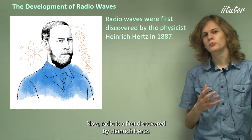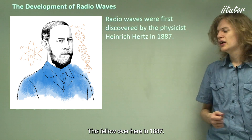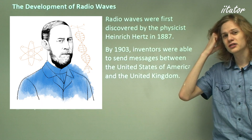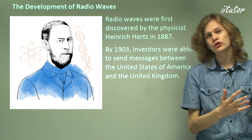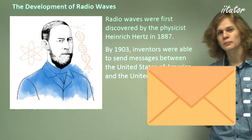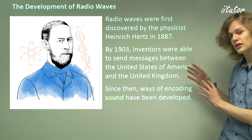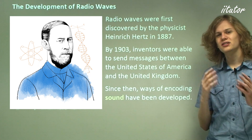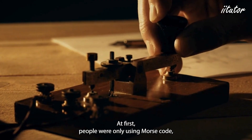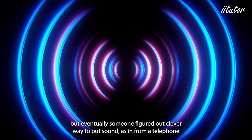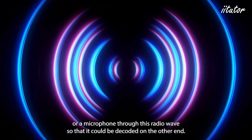Radio waves were first discovered by Heinrich Hertz in 1887. By 1903, just 16 years later, inventors were able to send messages across the ocean between America and the United Kingdom, proving how useful radio waves could be. Since then, people have figured out ways to transmit sound using radio waves. At first people were only using Morse code, but eventually someone figured out a clever way to put sound from a telephone or microphone into a radio wave so it could be decoded at the other end.